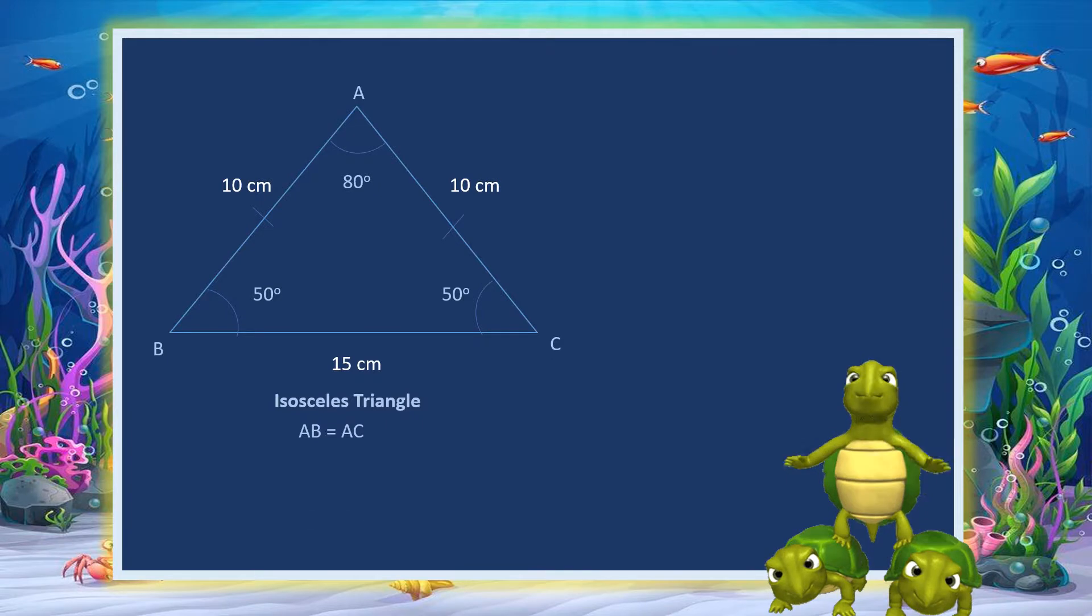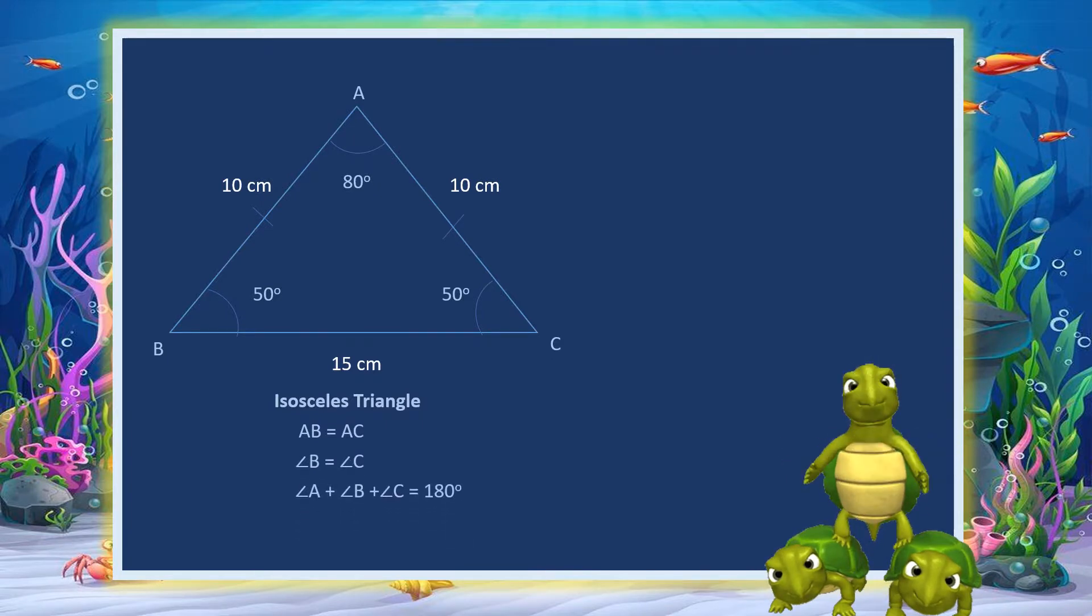This property is equivalent to two angles of the triangle being equal. An isosceles triangle therefore has both two equal sides and two equal angles. The sum of all the angles is still 180 degrees.